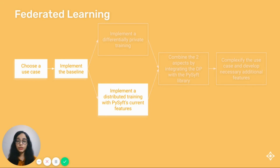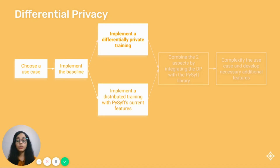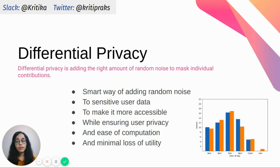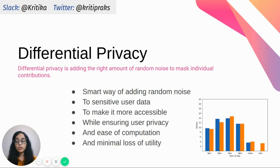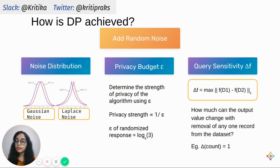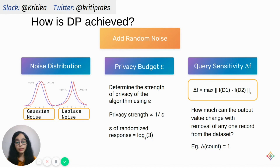Now that we have an idea of how distributed training is achieved using Federated Learning, let's look at how to preserve the privacy of hospital data using a technique known as differential privacy. Differential privacy is a smart way of adding random noise to highly sensitive user data to make it more accessible to applications while ensuring user privacy with minimal loss of utility. The shape and size of the noise distribution is determined by two factors: the privacy budget and the query sensitivity.